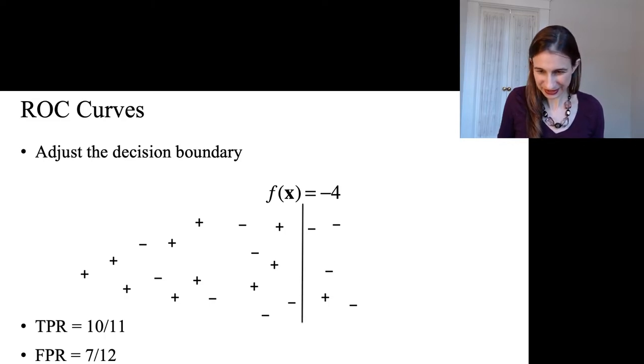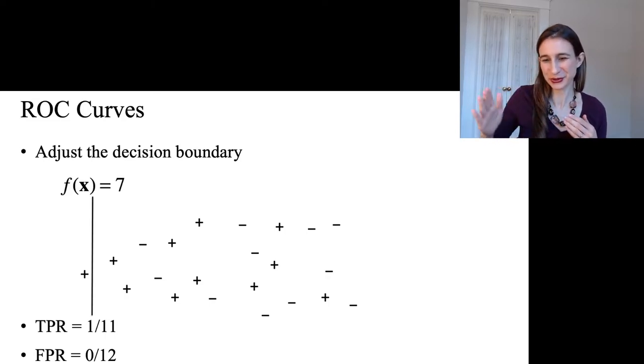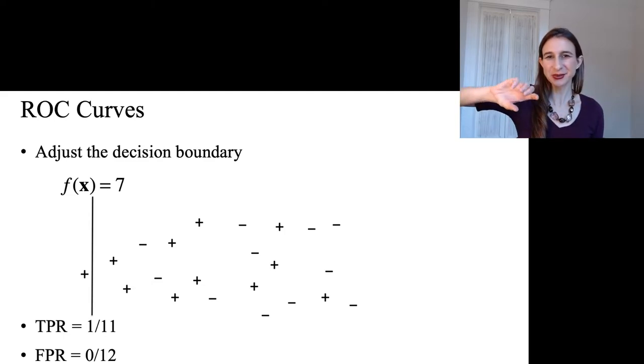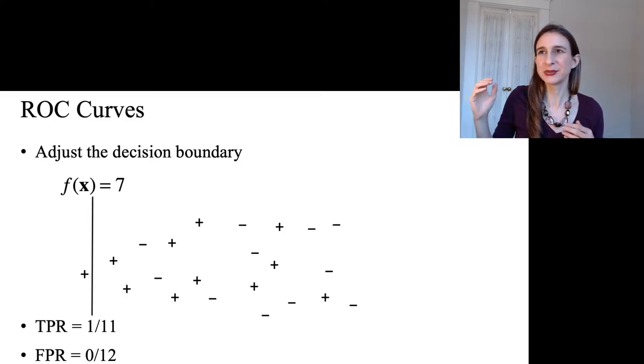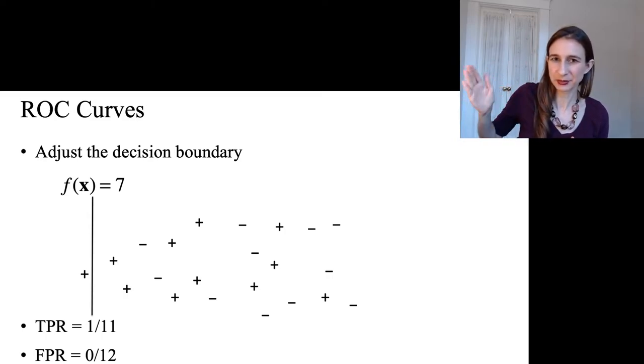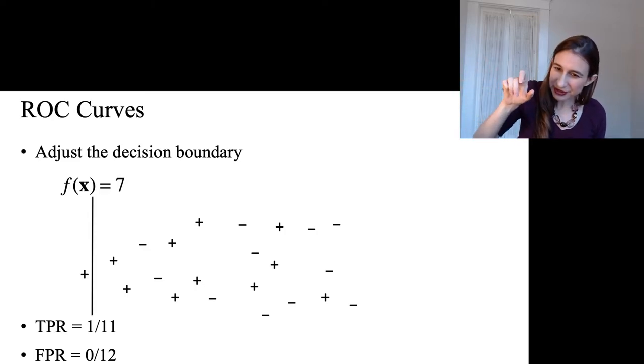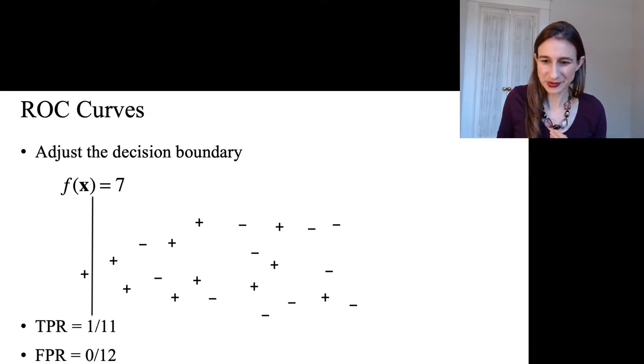I can move this decision boundary wherever I want. What I want to do is swing the decision boundary along its full range, and keep track for every different place I could put that decision boundary. For every tune on that knob, what are the true and false positive rates?